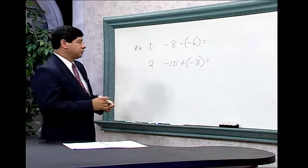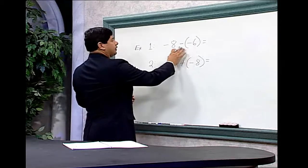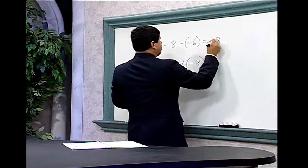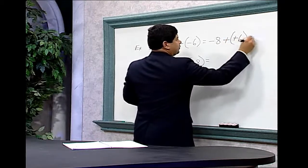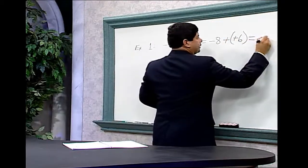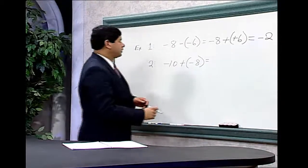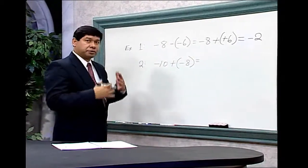Using our rules, changing the sign of the number being subtracted, we can convert this to negative eight plus positive six, which yields negative two. That's the solution. If there's any confusion, use your number line.